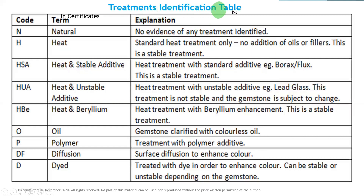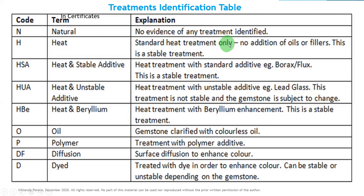These are the treatment identification tables. A code and explanation are given. N is for natural — no evidence of any treatment identified. H is for heat — standard heat treatment only, no addition of oils or fillers. This is a stable treatment and the color is stable. HSA means heat with stable additive — heat treatment with a standard additive such as borax or flux. This is also a stable treatment.